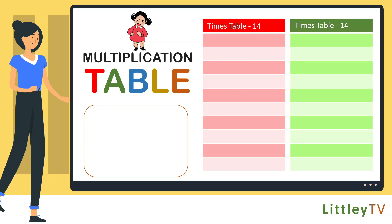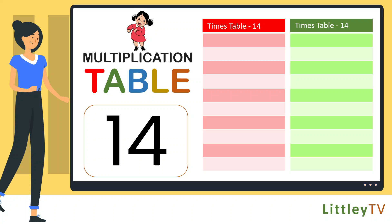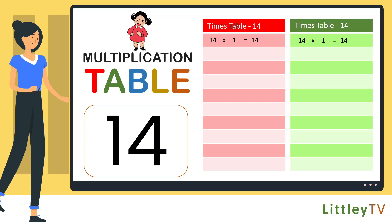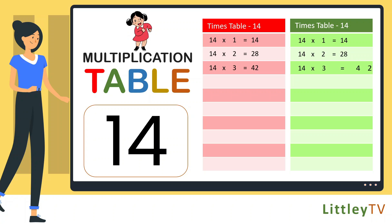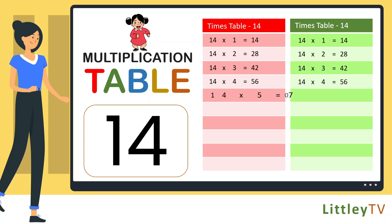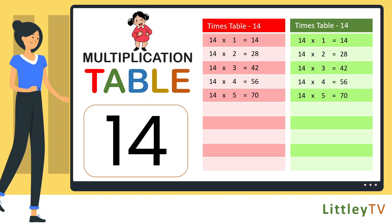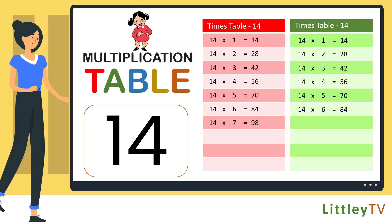Table of 14. 14 ones are 14, 14 twos are 28, 14 threes are 42, 14 fours are 56, 14 fives are 70, 14 sixes are 84, 14 sevens are 98.